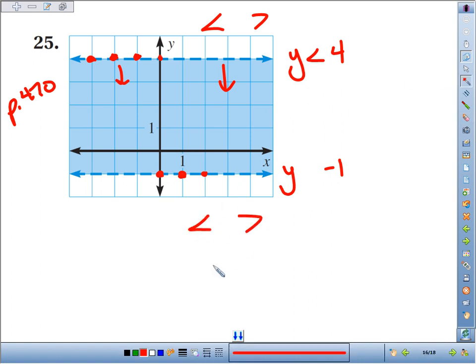Since it's dashed, it's got to be one of these. Since it's up, intuition tells us it's greater than. So the system of inequalities is right there.